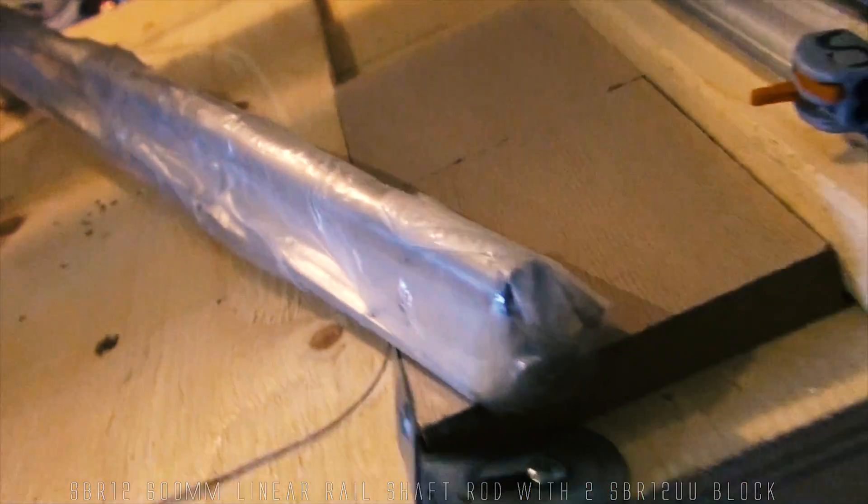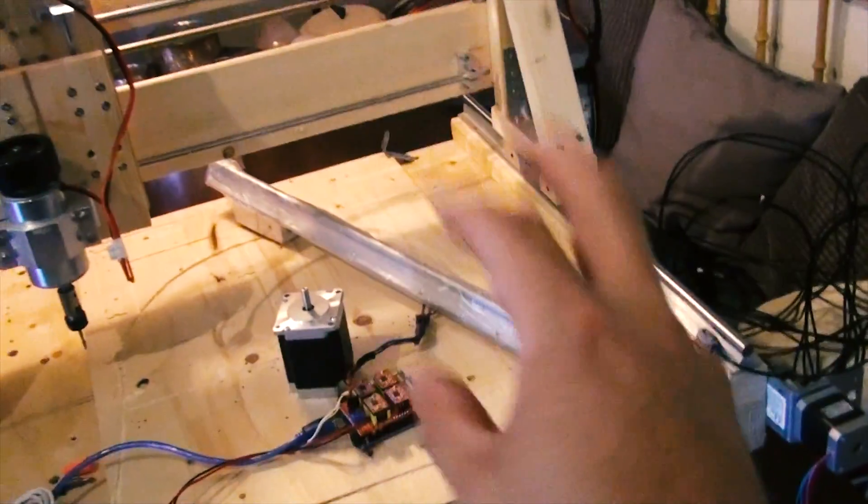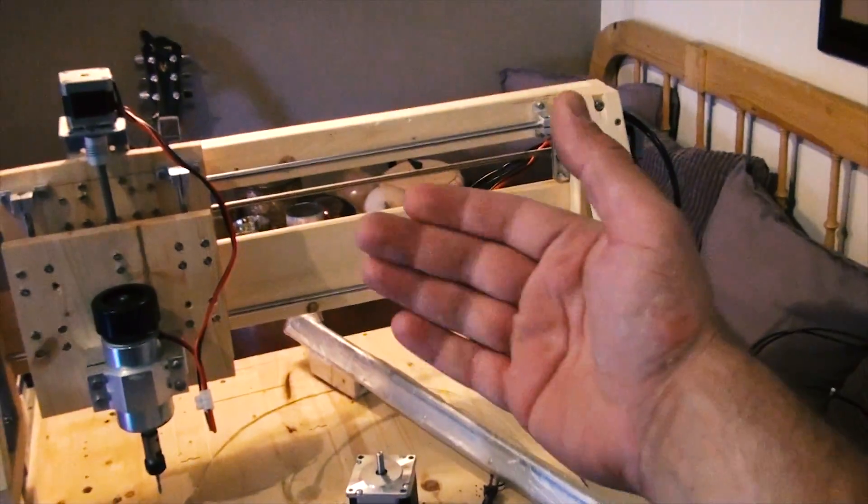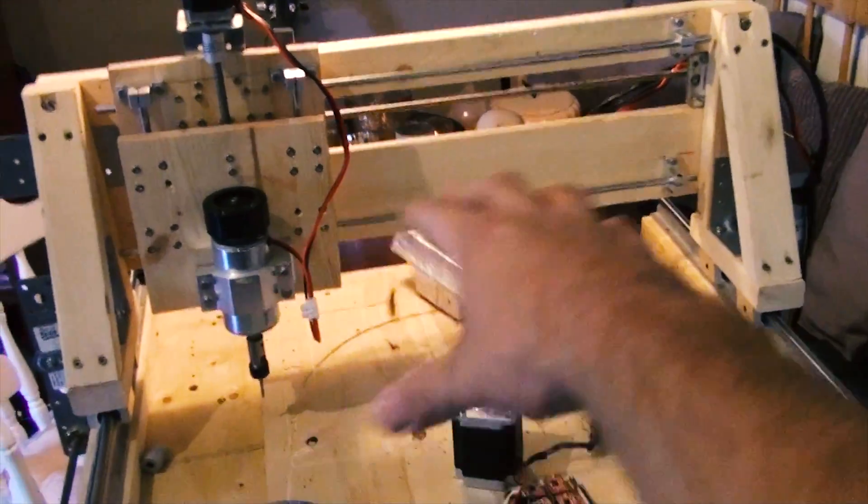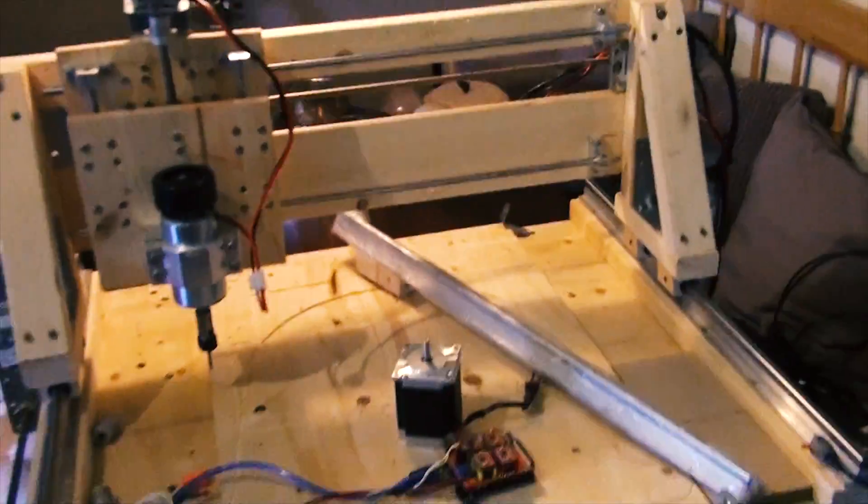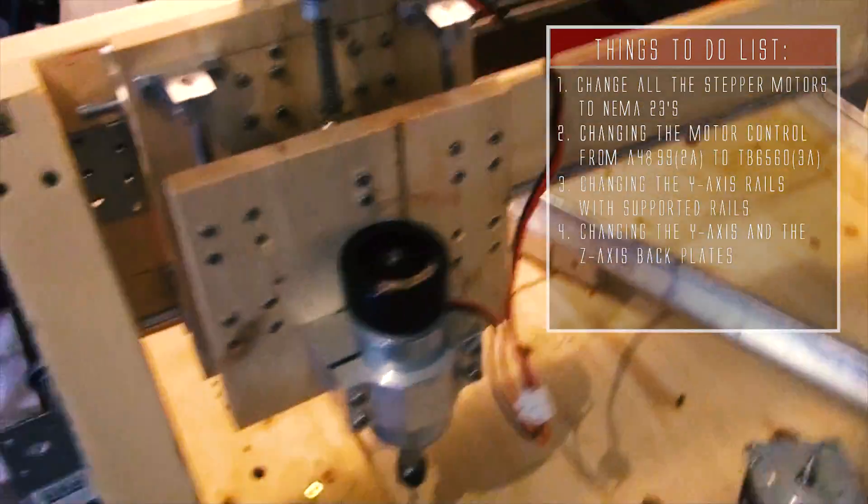So I'm going to use these rails on the y-axis like this. I hope that will fix the problem with the y-axis wobbling when the router is moving in its toolpath.